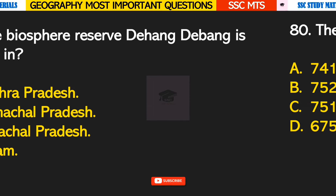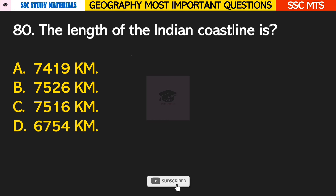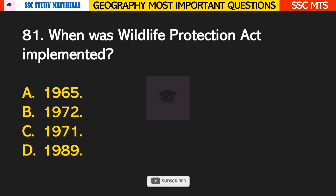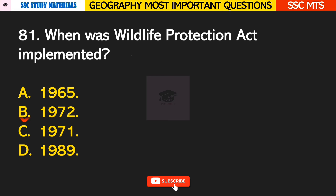Question number 80: the length of the Indian coastline is? Answer C — 7,516 km. Question number 81: when was the Wildlife Protection Act implemented? Answer B — it was implemented in the year 1972.